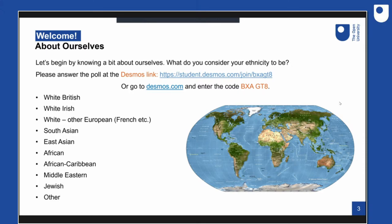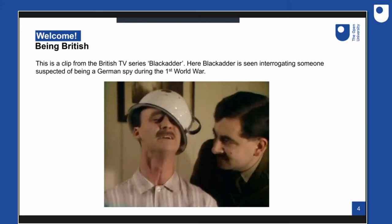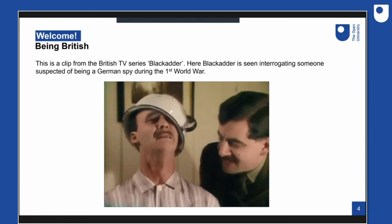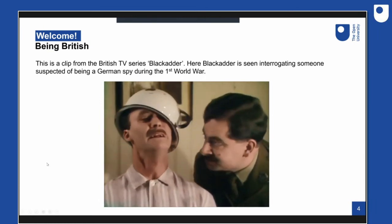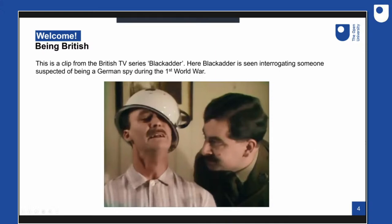We can move on to a clip from the British TV series Blackadder. This is relevant because it's really a question about who is British. In this scene, Blackadder interrogates someone during the First World War suspected of being a German spy. It's funny because the British royal family — the epitome of Britishness — is reminded of its German connection, which is something to think about when defining ethnicity.